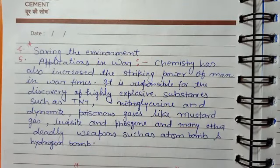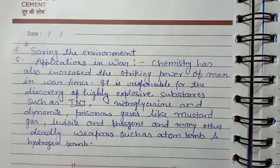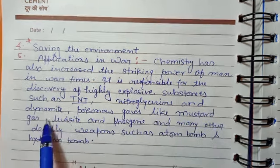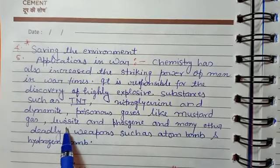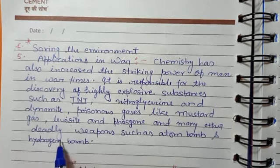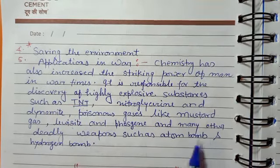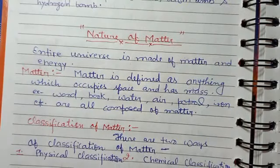It is responsible for the discovery of highly explosive substances such as TNT — full form trinitrotoluene — nitroglycerine and dynamite, poison gases like mustard gas, lewisite and phosgene, and many other deadly weapons such as the atom bomb and hydrogen bomb. All of these are manufactured using chemistry.